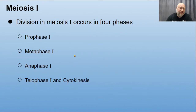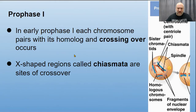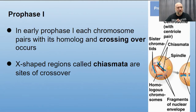Meiosis I occurs in four phases: prophase I, metaphase I, anaphase I, telophase I, and cytokinesis — structurally similar to mitosis with a few key differences. In prophase I, each chromosome pairs with its homologue and something called crossing over occurs. The X-shaped regions called chiasmata are the sites of crossover, where the two homologous chromosomes are in contact and can exchange genetic material.